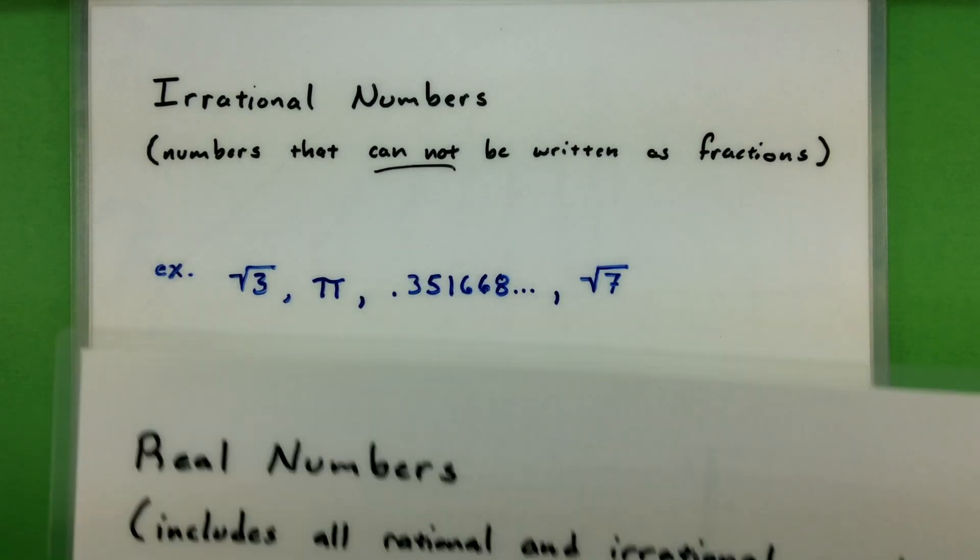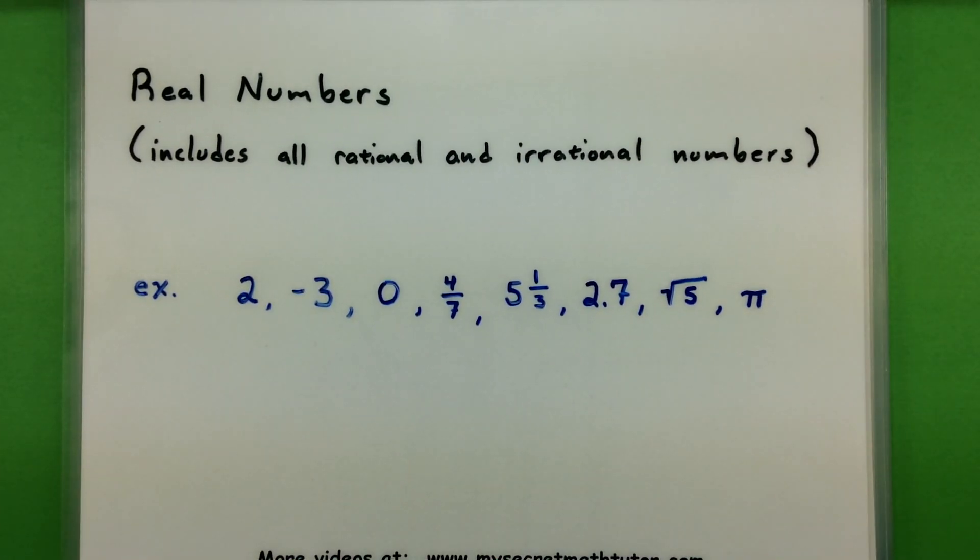Alright, one more group of numbers. And those are our real numbers. The real numbers really include all of the rational and the irrational numbers. And so they really make up the majority of the numbers you'll see working through some of the basic math videos.